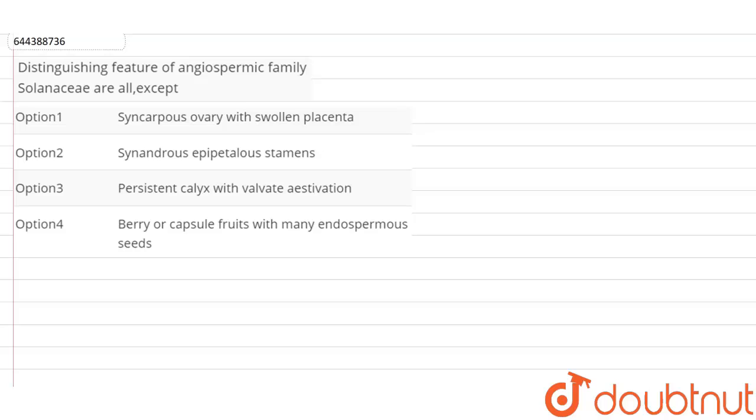In this question we have to look at the given options and select the one which is not a distinguishing feature of the angiospermic family Solanaceae. Solanaceae is a family of angiosperms or flowering plants which is also commonly known as the potato family.